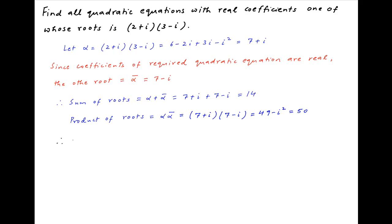Therefore, the required quadratic equation is x square minus 14x plus 50 is equal to 0, which is the required answer.